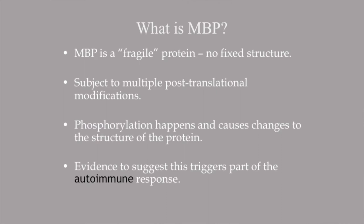MBP, unlike a lot of other proteins, has no tertiary structure. It's fragile, held together just by weak hydrogen bonds. That being the case, it's also subject to a wide range of post-translational modifications, one of the main ones being phosphorylation. The theory is that this phosphorylation changes the structure of MBP at certain points, causing the body to recognise the myelin basic protein as foreign, and then develop an autoimmune response against it, which causes MS.